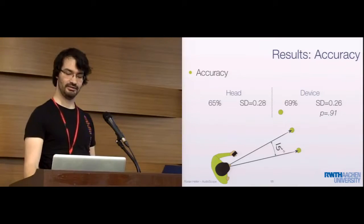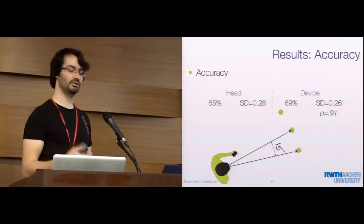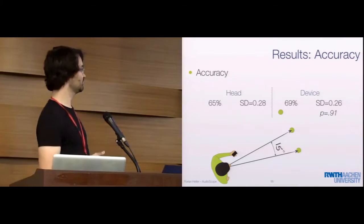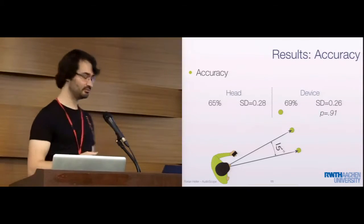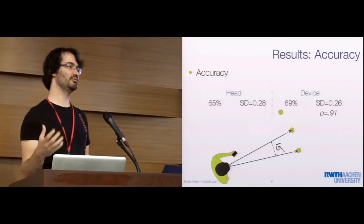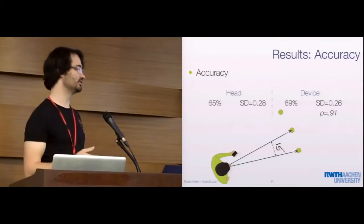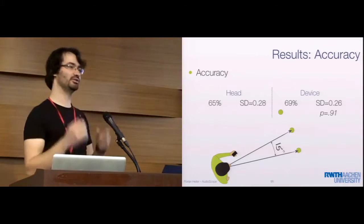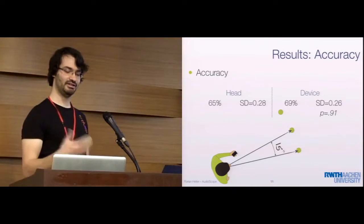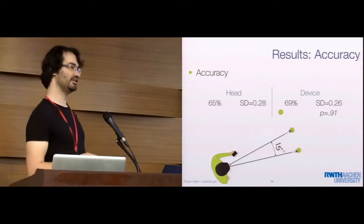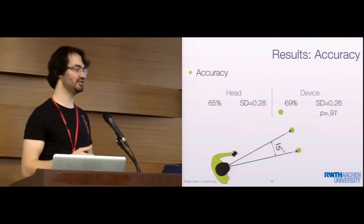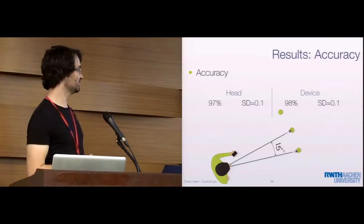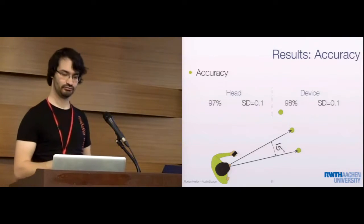Since we also had the participants name the source that they thought was actually playing, we checked if that was actually correct, and we got some disappointing results with an accuracy of 65 to 69%. However, this 15-degree spacing is the lower limit of what you can differentiate with spatial audio rendering. Meaning that even with high-tech rendering, you probably wouldn't be able to differentiate between two sources that are this close. So we basically counted off-by-one errors as correct, representing a larger spacing between the two sources. If we count off-by-one errors as correct, we achieve high results of 97% to 98% accuracy, which is totally acceptable.